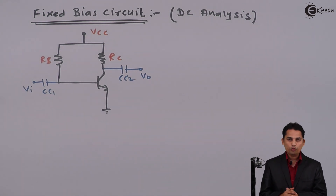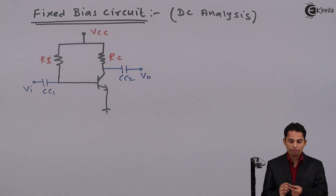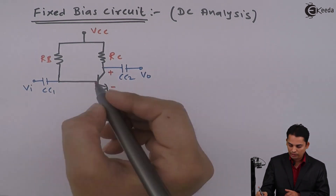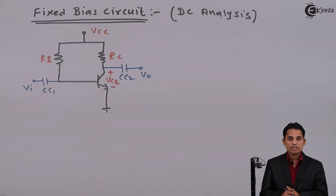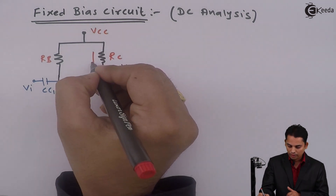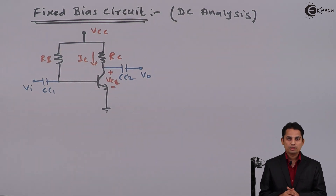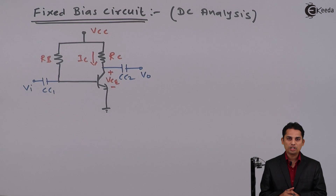During DC analysis, what we do is we will try to find out DC current IC and DC voltage across the transistor called as VCE. The voltage between collector to emitter is called as VCE, which is our first DC point. The second DC point is current from collector, which is called as IC. Our aim is to find out IC and VCE from the given circuit.